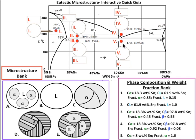Here's the last question, number 10, at the point 170 degrees Celsius and 61.9% Sn, at Roman numeral 5, or this red dot right there, what is the microstructure? Your answer would go in this bubble right there, and your choices are A, B, C, D, and E.